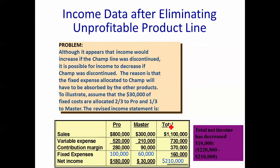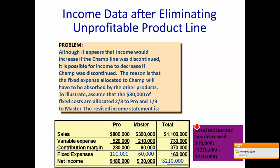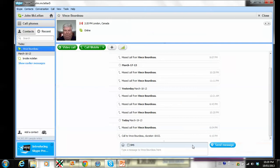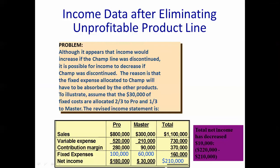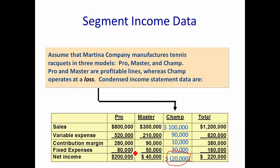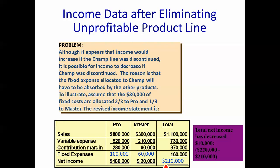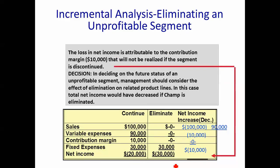If I get rid of Champ, I get rid of the sales, the variable expenses, and the contribution margin. But I still have the fixed costs, and I have to divide those fixed costs. That extra $30,000 has to be divided between Pro and Master. When I do that, you can see my profit did not go up — it actually went down by $10,000. So by using incremental analysis, it helps us make the decision as to whether or not to eliminate an unprofitable division.